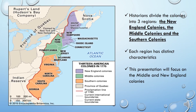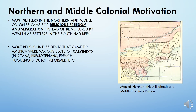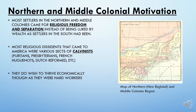Here you see a map of the Colonial Zones, focusing on the Middle and New England Colonies in green and purple. The primary motivation for the Northern and Middle Colonies was religious freedom and separation — starkly different from the Southern Colonies, which primarily came over for economic ventures. Most of the religious dissidents were various sects of European Calvinists, the biggest group being the Puritans. They also wanted to thrive economically, and they did, because of their strong work ethic.